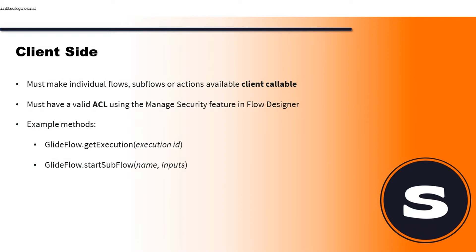Arguably there's a third step where we need to apply that ACL to a specific role and then the role to a person. We've got some example methods here as well - we call it using GlideFlow and we can do things like getExecution, startSubFlow, startFlow, startAction, and others. I'll put the link to the API documentation in the description so you can check out the rest.